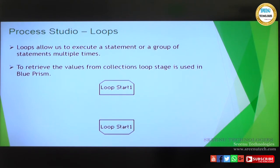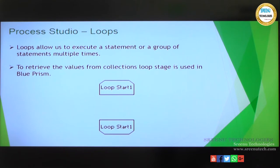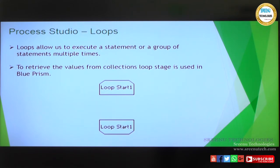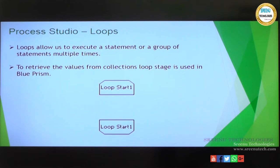Circular path means some series of steps to be iterated multiple times. Loop is when you have a collection with multiple records and you want to iterate through each row, each record in that collection. Let's go back to the tool and understand how we can iterate through the records we have added into the collection.